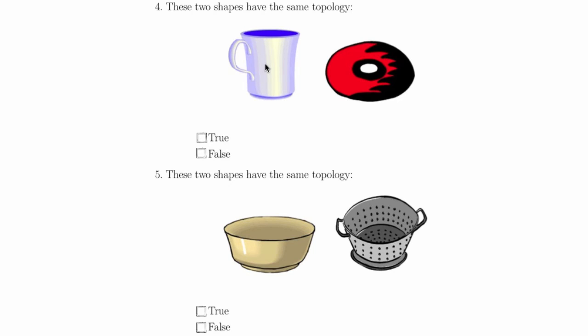Question 4 asks if these two shapes, the coffee mug and the donut, have the same topology. This is a very famous example in topology, because the coffee mug can be continually deformed without piercing any holes to a donut, and vice versa. A coffee mug and a donut have the same topology, so this is true.